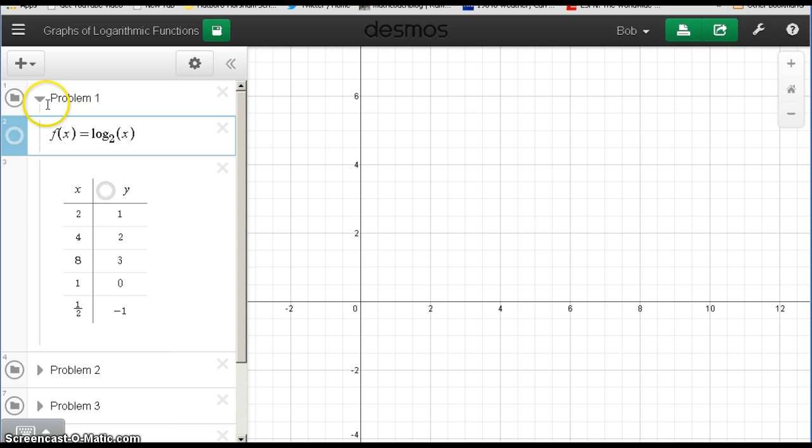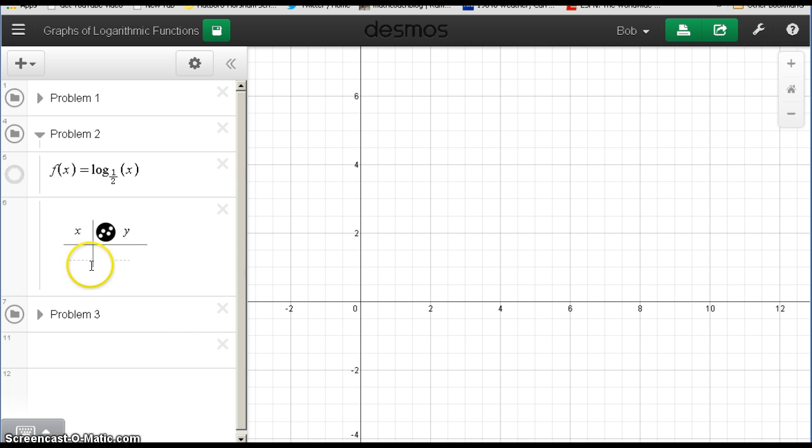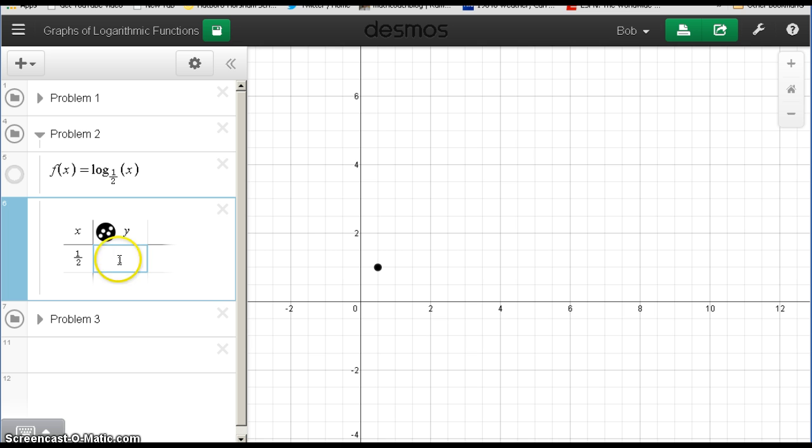Let's take a look at a couple more here. Let's get rid of all these guys and look at our second problem. F of x equals log base 1 half of x. Again I want to put in things that are powers of 1 half. What if I put in 1 half itself? That would mean 1. That point is plotted here.